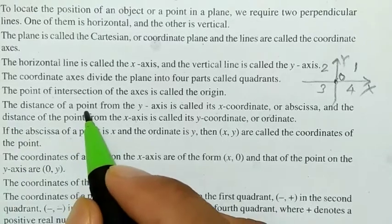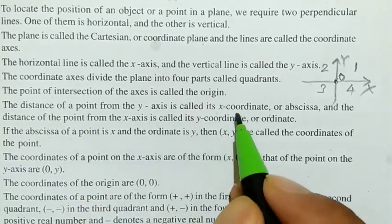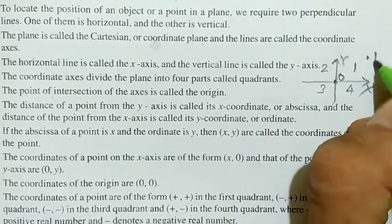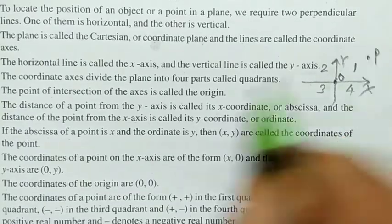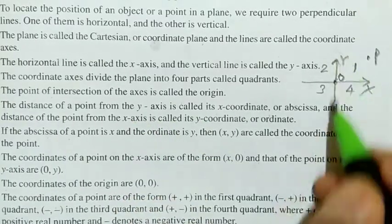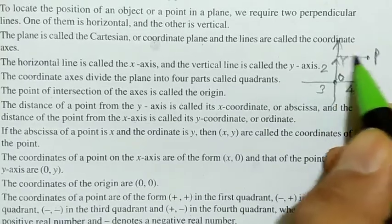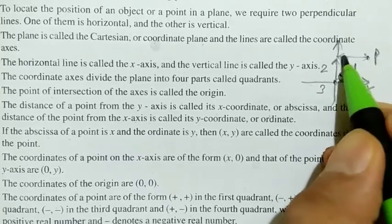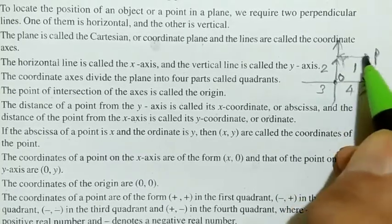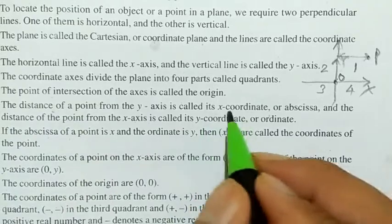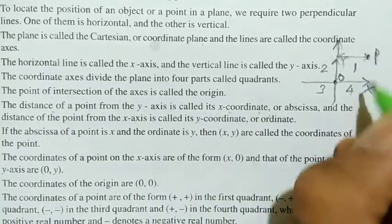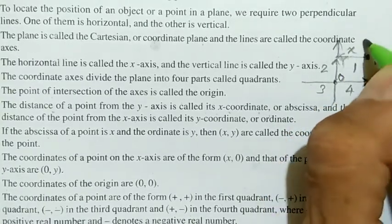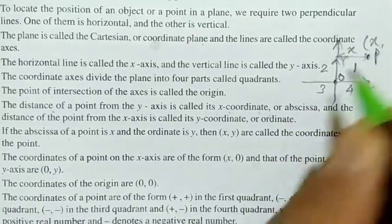The distance of a point from the y-axis is called its x-coordinate. Let's take any point P — the distance of this point P from the y-axis is called the x-coordinate. Let's say this distance is x. So this distance is called the x-coordinate of the point.